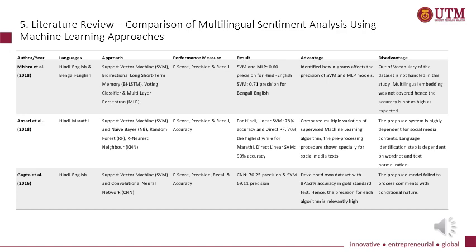From Ansari et al. using Hindi-Marathi code mixed data, the approaches were Support Vector Machine, Naive Bayes, Random Forest, and K-Nearest Neighbor, measured by F-score, precision, recall, and accuracy. For Hindi, Linear SVM achieved 78% accuracy and Direct Random Forest achieved 70% accuracy. For Marathi, Direct Linear SVM achieved 90% accuracy. The advantage was that multiple variations of supervised machine learning algorithms and preprocessing procedures were compared, specifically for social media text. The disadvantage was that the system was highly dependent on social media context, and language identification was dependent on WordNet and text normalization.